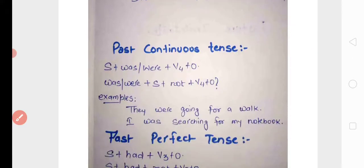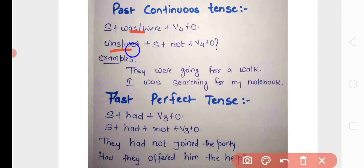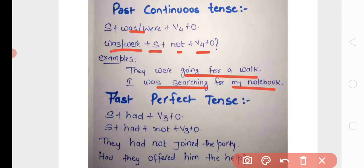Next is past continuous tense. Like present continuous, it uses helping verb plus V4, but here the helping verb is 'was'/'were' instead of 'am/is/are'. Structure: was/were plus subject plus not plus V4 plus object. Examples: 'They were going for a walk', 'I was searching for my notebook' — وو لوگ ٹہلنے جا رہے تھے، اور میں اپنی notebook تلاش کر رہا تھا۔